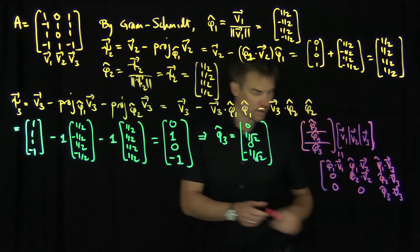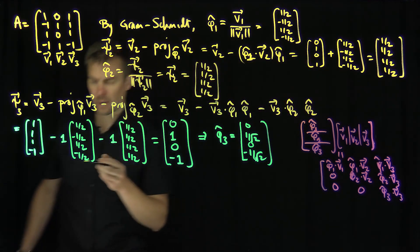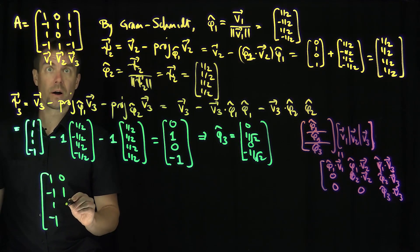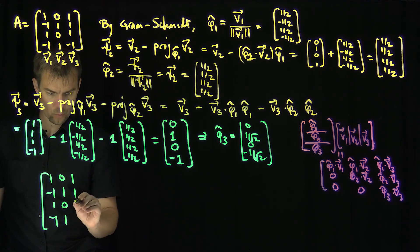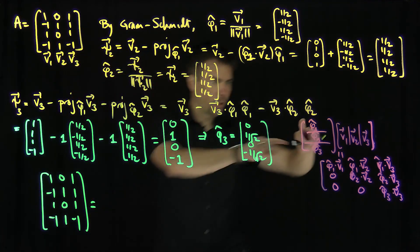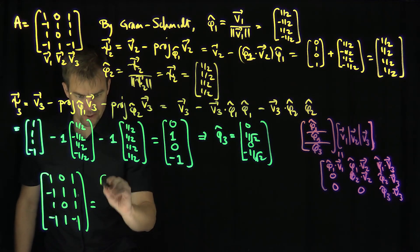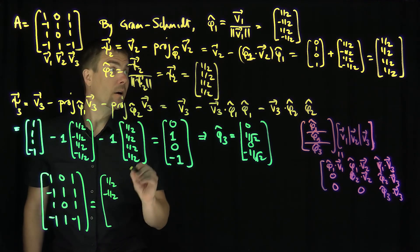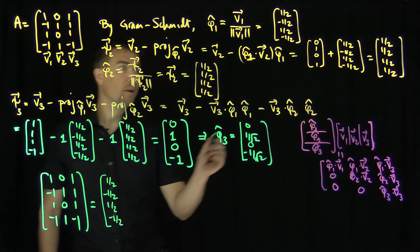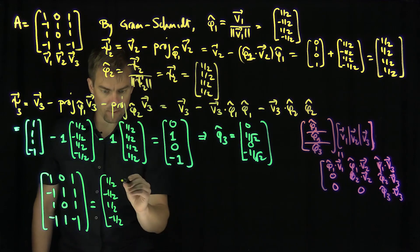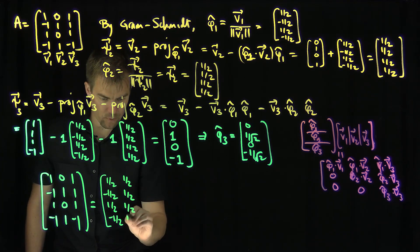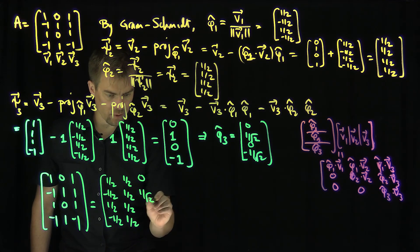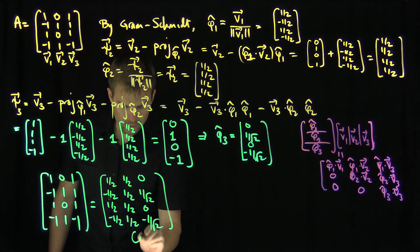Our final answer: matrix A equals Q times R. The Q matrix has columns φ̂₁ = [1/2, -1/2, 1/2, -1/2], φ̂₂ = [1/2, 1/2, 1/2, 1/2], and φ̂₃ = [0, 1/√2, 0, -1/√2].